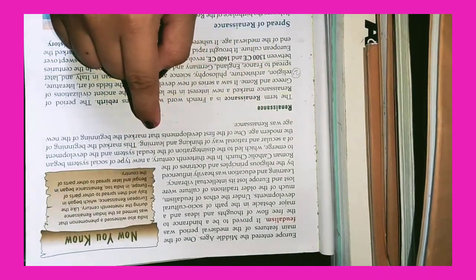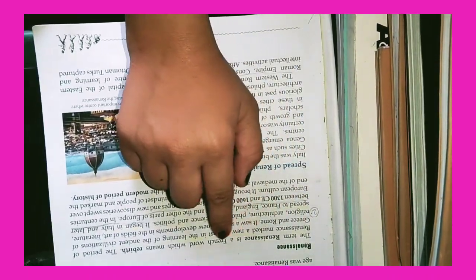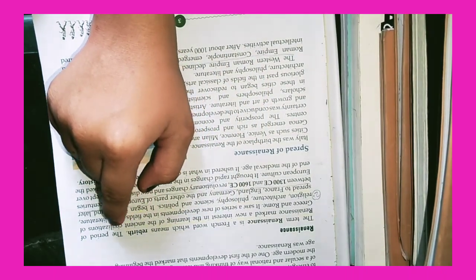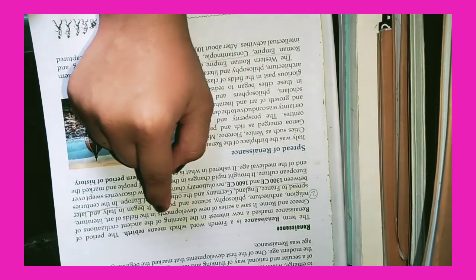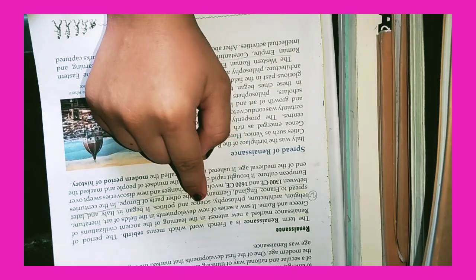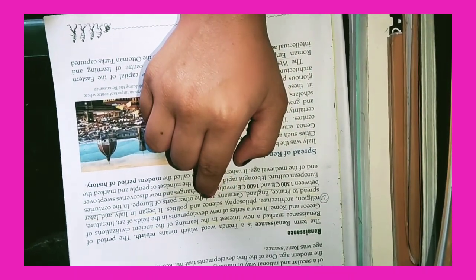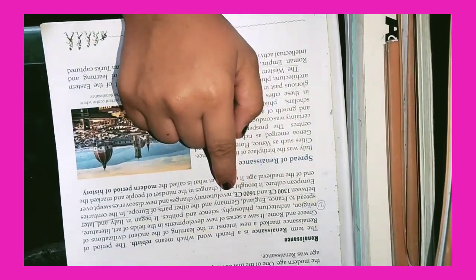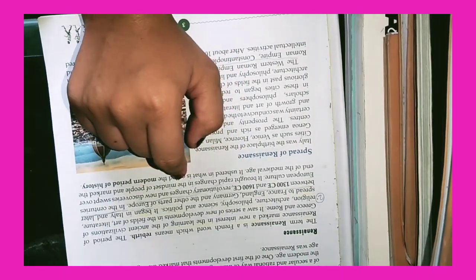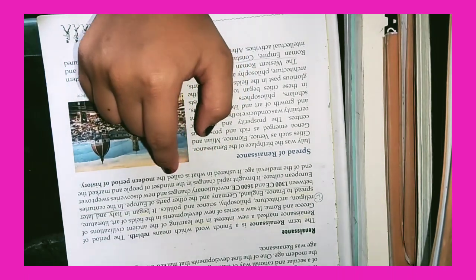One of the first developments that marked the beginning of the new age was Renaissance. Renaissance: The term Renaissance is a French word which means rebirth. The period of Renaissance marked a new interest in the learning of ancient civilizations of Greece and Rome. It saw a series of new developments in the fields of art, literature, religion, architecture, philosophy, science, and politics. It began in Italy and later spread to France, England, Germany, and other parts of Europe. In the centuries between 1300 CE and 1600 CE, revolutionary changes and new discoveries swept over European culture. It brought rapid changes in the mindset of people and marked the end of the medieval age. It ushered in what is called the modern period of history.